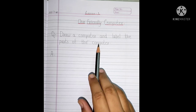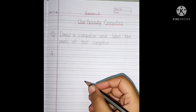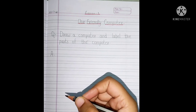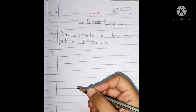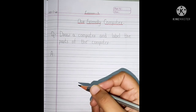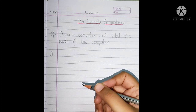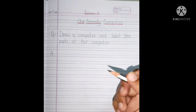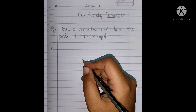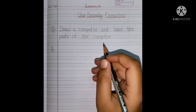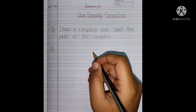But children, did you watch our first lesson video? In that video, it showed you how to draw a computer and the spellings of the parts of the computer. Now, let us draw the computer together and let us label its parts. Okay, children?